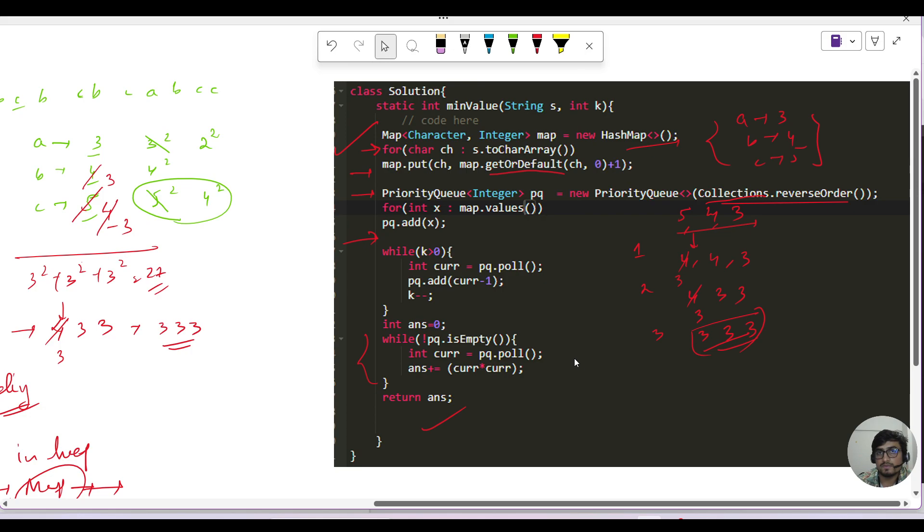What would be the time and space complexity? Space complexity would be definitely O of n because you have used a map and a priority queue. So O of n. And time complexity would be O of n log n, since adding anything in the priority queue or pulling out anything from the priority queue takes log n time. So it would be n log n. This thing takes n log n, and this thing also takes n log n.